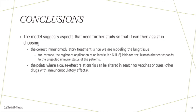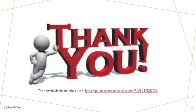We believe this model is a first step. The model suggests aspects that need further study so that it can assist in choosing the correct immunomodulatory treatment — for instance, the regime of application of an interleukin-6 (IL-6) inhibitor, tocilizumab, that corresponds to the projected immune status of the patients. It could lead to finding the points where a cause-effect relationship can be altered in search for vaccines or cures. Thank you very much for your attention. The paper includes the link to the downloadable materials. Any questions, please contact us.